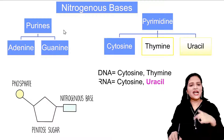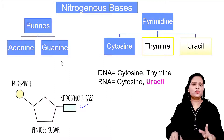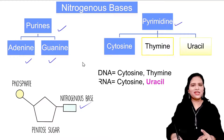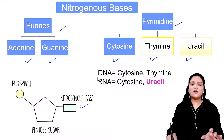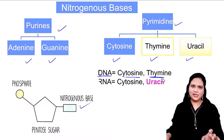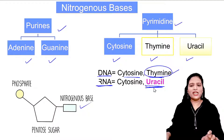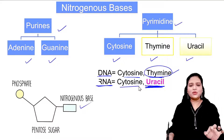Now let's look at nitrogenous bases. There are two types: purine bases and pyrimidine bases. Adenine and guanine are purines; cytosine, thymine, and uracil are pyrimidines. In DNA, the pyrimidine bases are cytosine and thymine, whereas in RNA, instead of thymine, uracil is present. So there is no thymine in RNA — only uracil. The pyrimidine bases in RNA are cytosine and uracil.